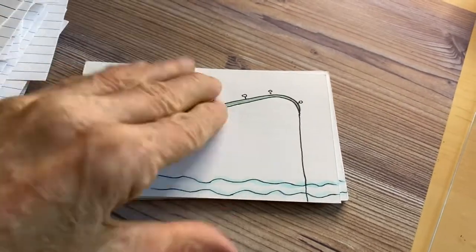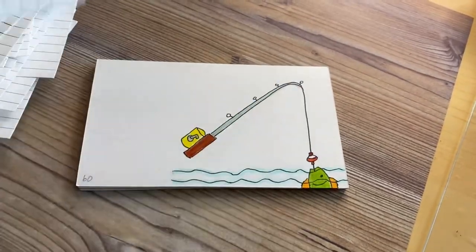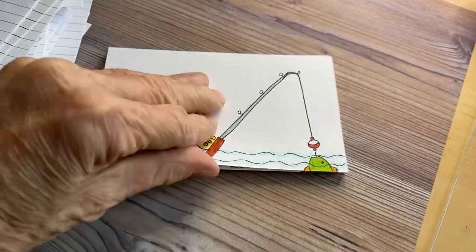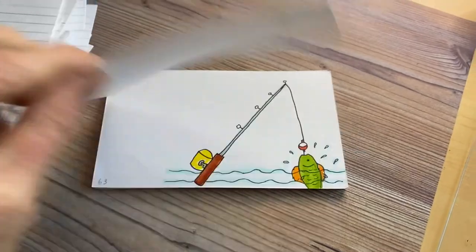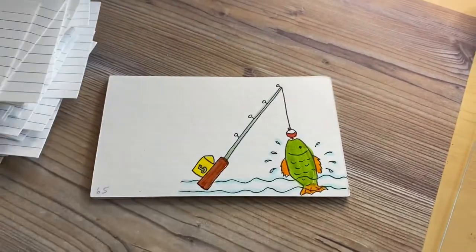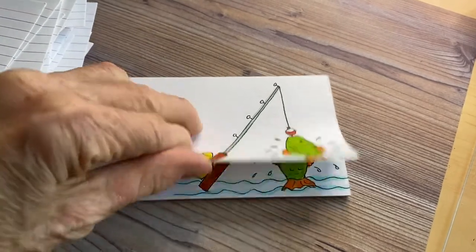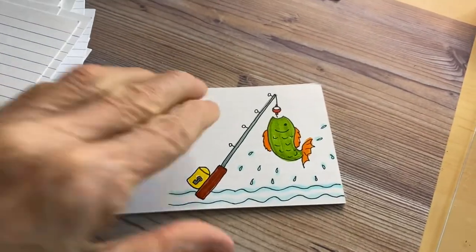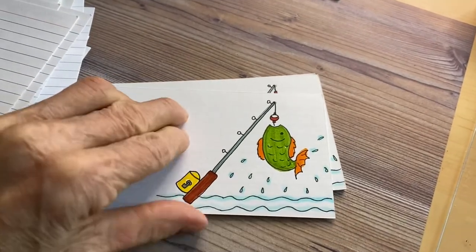Eventually the fish starts to grab onto the worm and the worm is in his mouth, so the poor fish is hooked here. Then he's pulling out of the water and he's wiggling back and forth like a fish does on the end of a fishing pole.